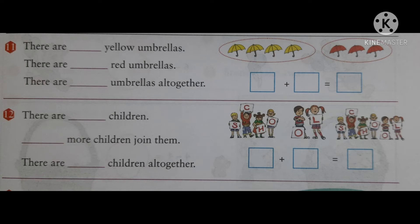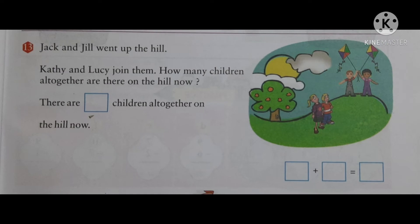Now, the next. Jack and Jill went up the hill. Kathy and Lucy join them. How many children all together are there on the hill now? So, there are total number of children all together on the hill. You have to write.